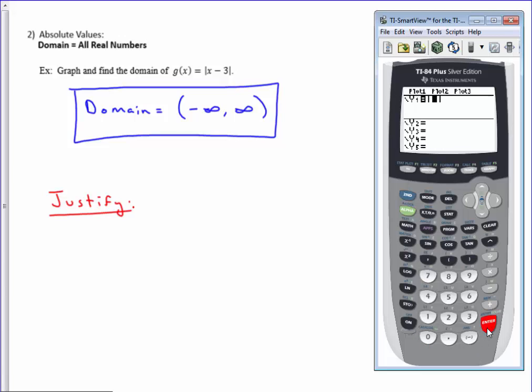That will either put in your screen abs in the parentheses or it will put the absolute value bars as it has done with mine. And then just type in x minus 3. If your calculator inserts the abs as opposed to the actual absolute value bars, you will have to use a parenthesis to close off the x minus 3 function.